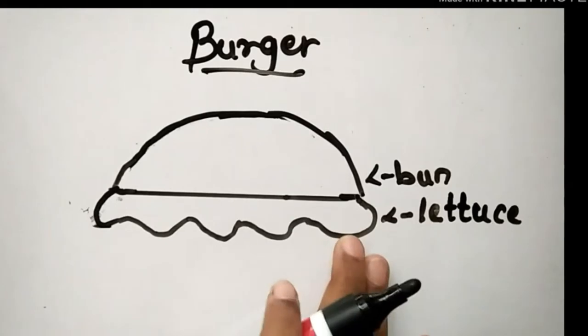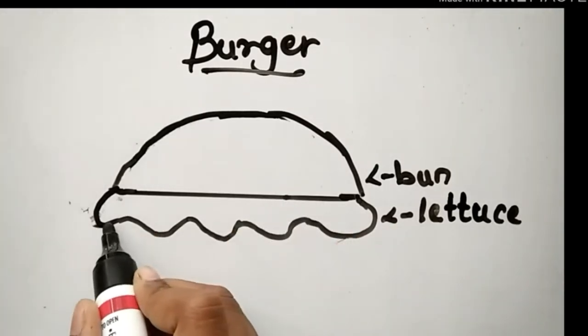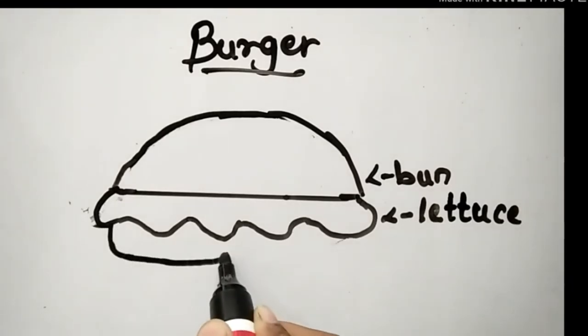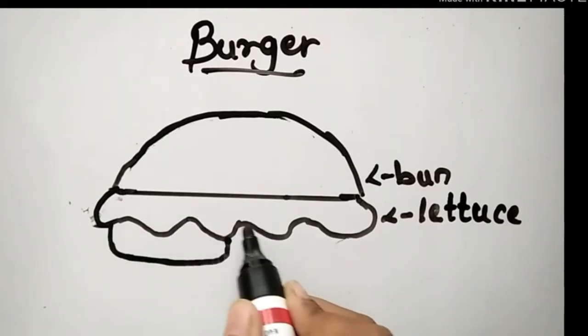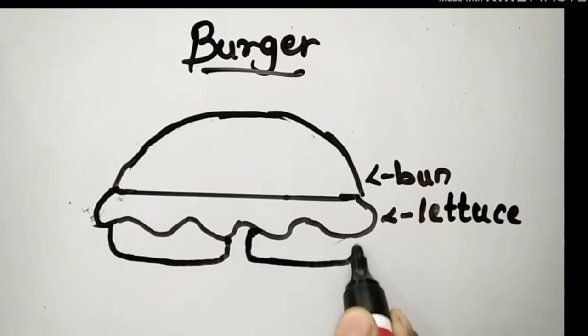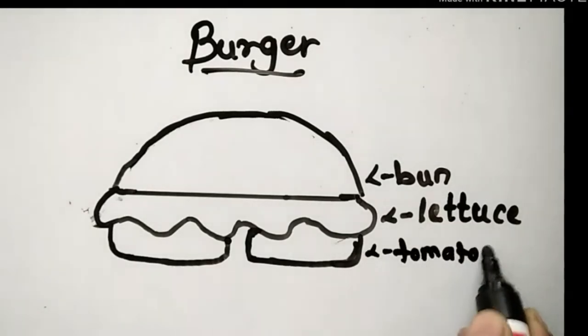And now we are going to draw two tomatoes. This is the first tomato. And now, this is the second. Okay, now these are two tomatoes.